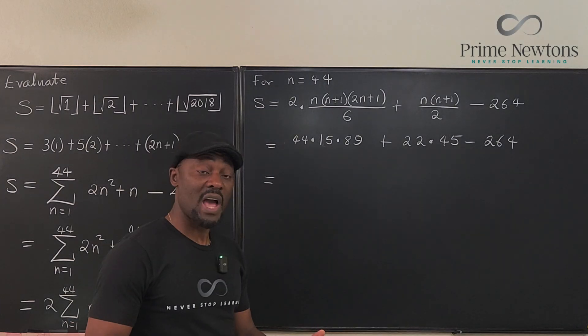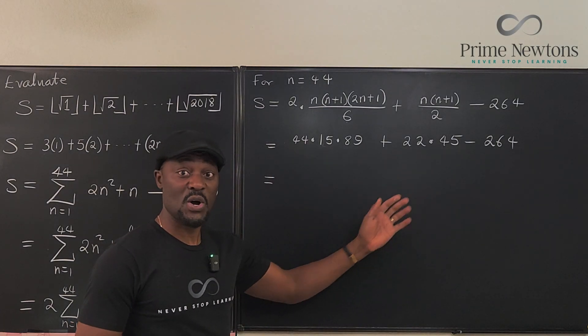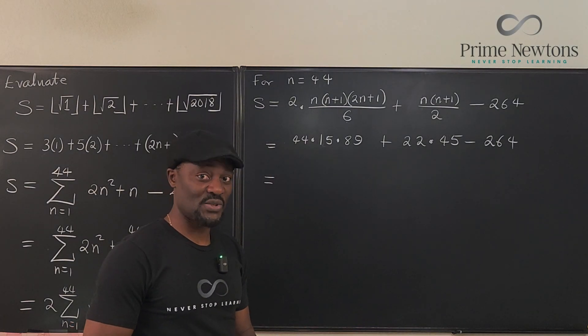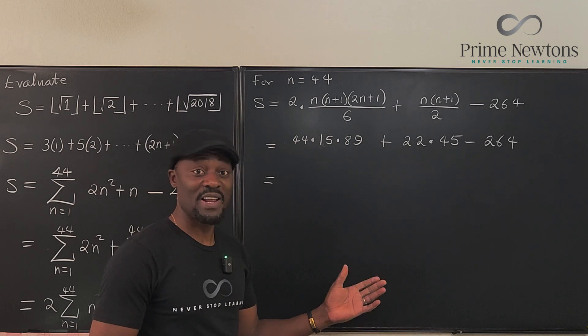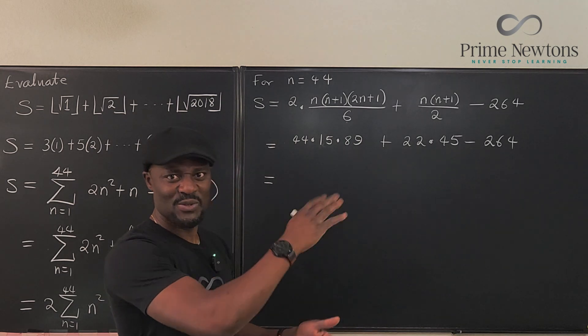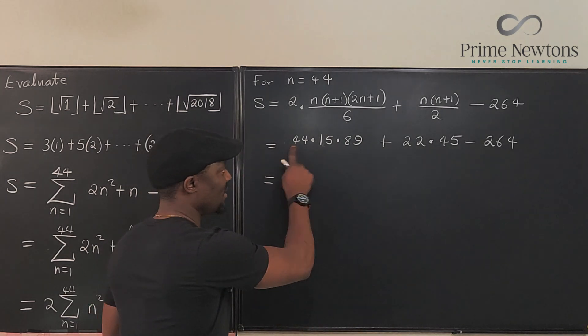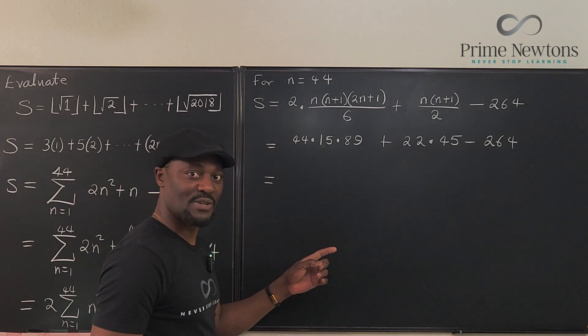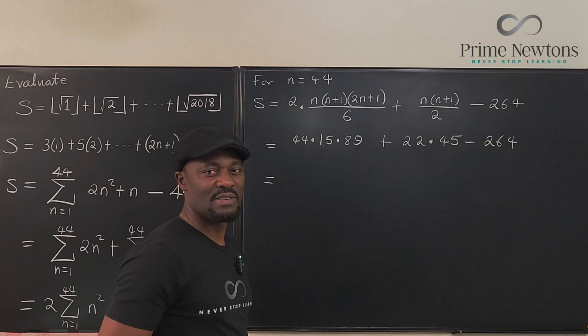We use that to divide this 44. Plus, this divided by 2 gives us 22 times 45 minus 264. I hope this is correct. This is scary. Now, if you ask me if I want to do this manually or want to use a calculator, I would say I'd like to use a calculator. Now, if you are in a competition, just sit down and do the multiplication. Definitely. This is 660 times 89. That's easy to do.